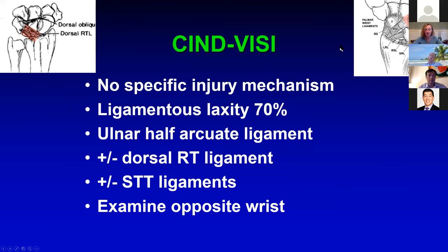In those that are traumatic, it involves injuries to the ulnar half of the arcuate ligament, the dorsal radiotriquetral or dorsal radiocarpal ligament, and/or the STT ligaments. Examine the opposite wrist — it will generally be lax, but sometimes without the catch-up clunk. Fluoroscopy can be very helpful to show the deformity as you bring from radial to ulnar deviation.